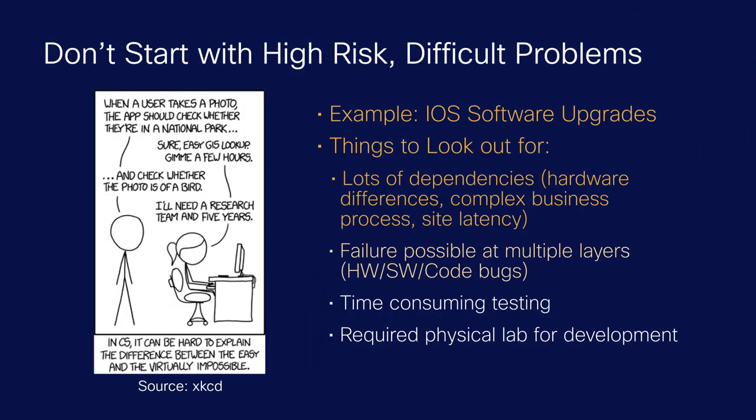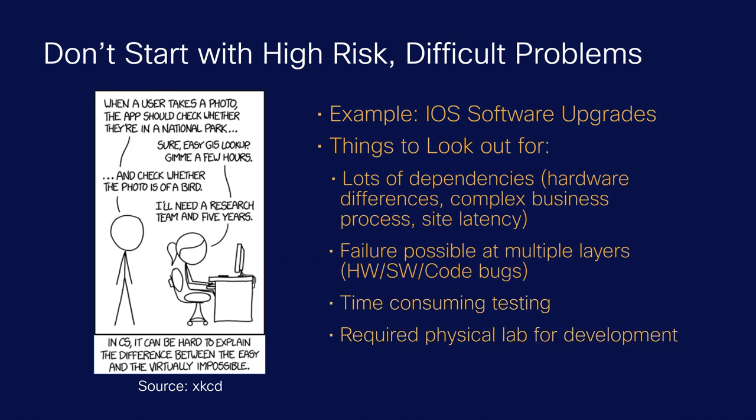You have lots of dependencies and failure at multiple layers. You could have a failure on the device itself, a hardware failure, a software bug, or even code bugs within your automation. So when you're starting with network automation, you want to focus on lower-risk, simpler problems that still impact the business positively. Focus on read-only things that won't impact production. Start with labs first — virtual or physical — to prove your automation is working, with a confined scope. Build trust and confidence within your team.